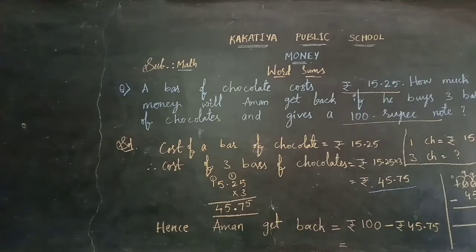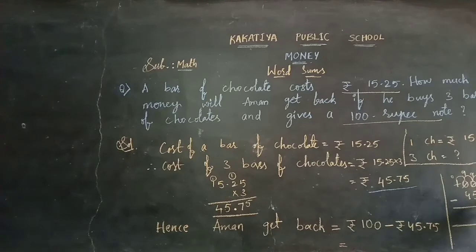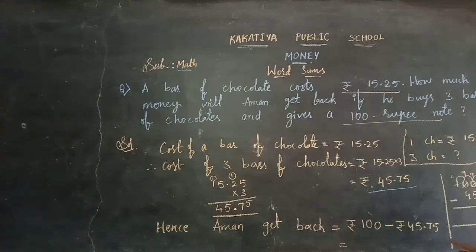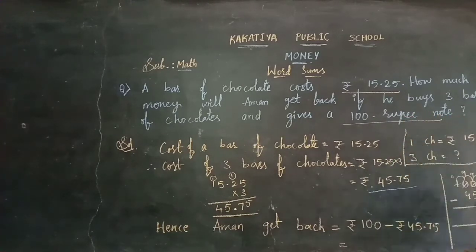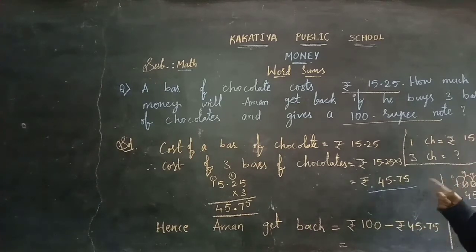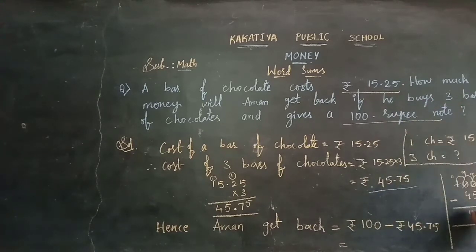9 minus 7: count from 7 to 9, that is 2 numbers required, so 2. Now 9 minus 5: count from 5 to 9, that is 4 numbers required, so 4. And 9 minus 4: count from 4 to 9, that is 5 numbers required, so 5. And here 0. So the get-back amount is 54 rupees 25 paise.